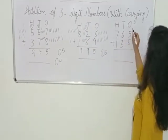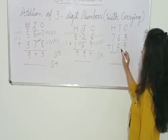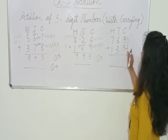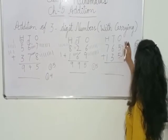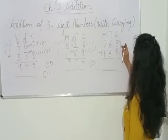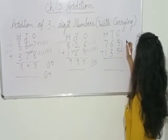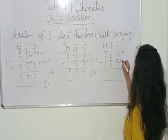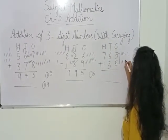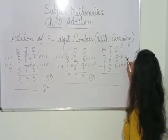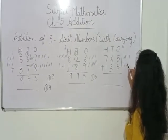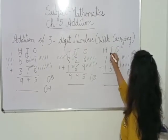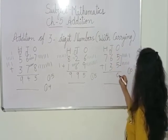Now here we have 765 and 135. Always remember that when we do addition, we start from the ones side. 5 plus 5: we draw 5 lines — 1, 2, 3, 4, 5 — then 5 more lines: 1, 2, 3, 4, 5. Total count: 1, 2, 3, 4, 5, 6, 7, 8, 9, 10. We have 10, so we carry forward 1 to the 10's place and write 0 here.